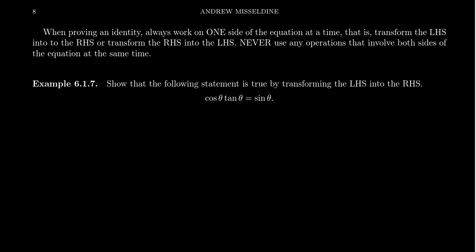So the first tip, which you can see here on the screen, when proving a trigonometric identity, always work one side of the equation at a time. That is, transform the left-hand side into the right-hand side or transform the right-hand side into the left-hand side. We never, ever, ever, ever, ever, one more time, never use operations that involve both sides of the equations at the same time.